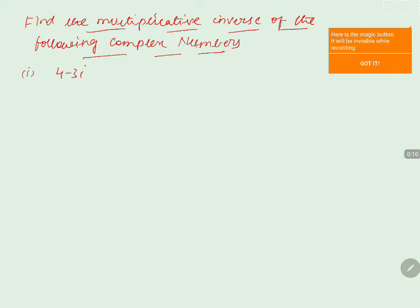Before going to take the multiplicative inverse of the complex number, first we will write the multiplicative inverse in general form. If z is a complex number, then its multiplicative inverse is written as 1 by z.